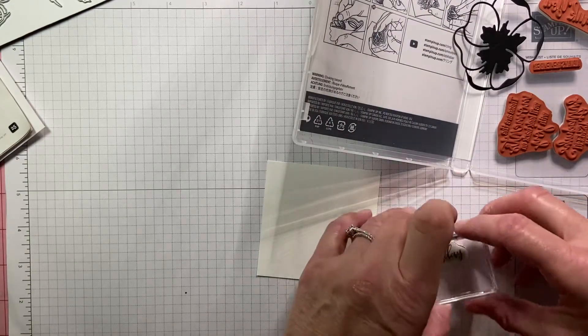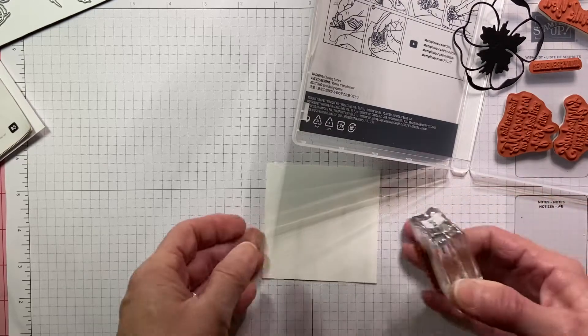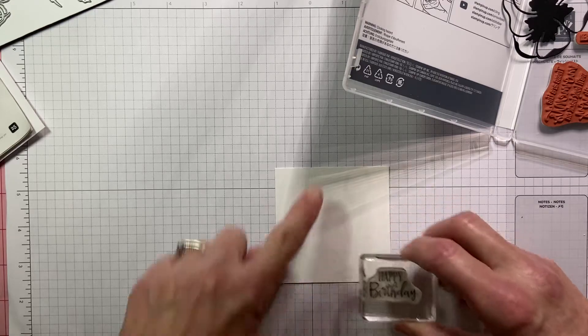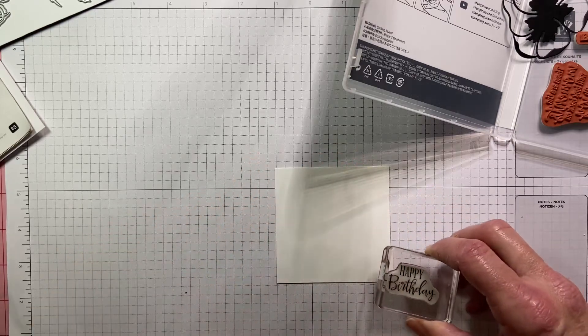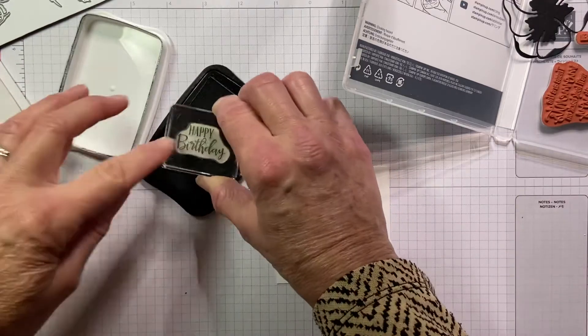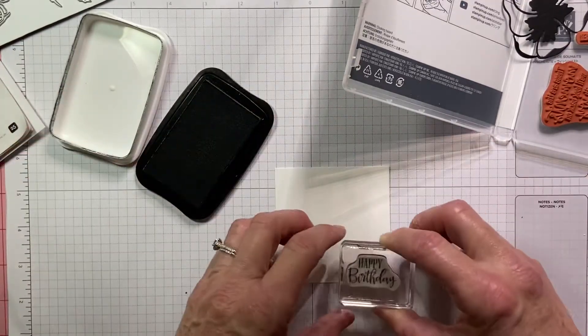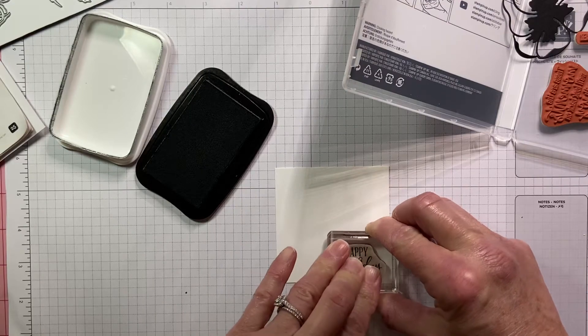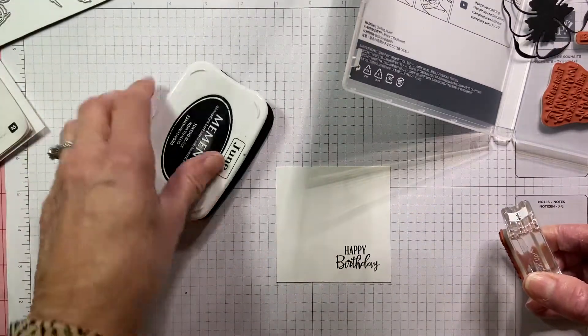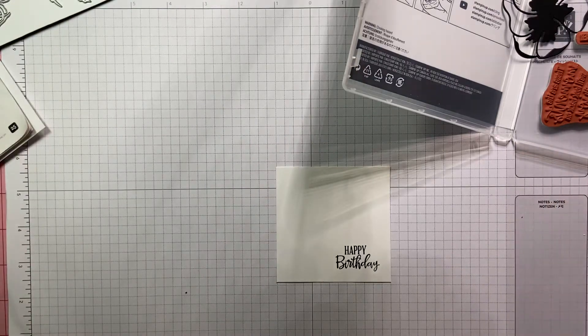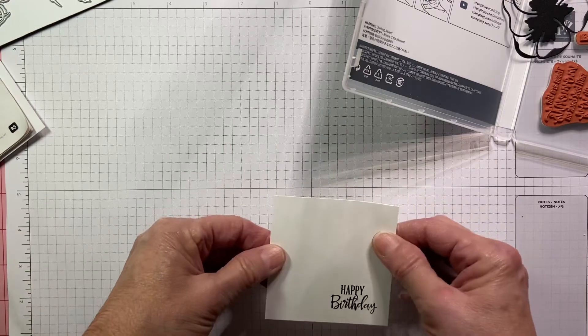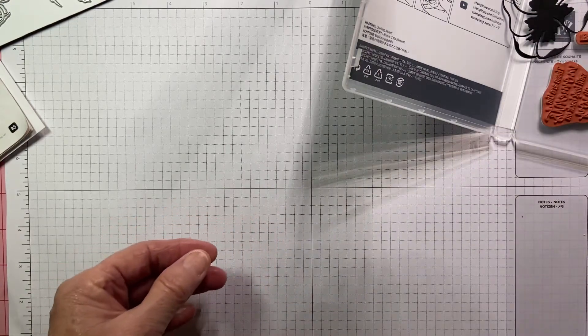Take out the happy birthday stamp right here. We'll put that on a block. I'm going to be putting my sentiment on the bottom right hand corner because we're going to make it all pretty up here. So let me get my Memento black and we'll stamp it right down here. There we go. Happy birthday, and happy birthday to anyone that's watching. I'm going to put this aside right now. We'll get back to that one.